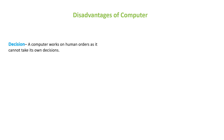Decision: the first disadvantage is decision-making. A computer works on human orders and it cannot take its own decisions. As humans, we can think and take decisions in difficult situations, but a computer cannot do that — it cannot think on its own. Whatever you guide the computer, the computer can do only that much. That is a disadvantage.